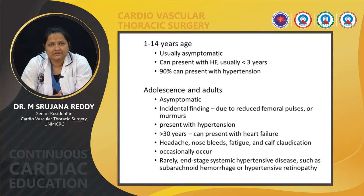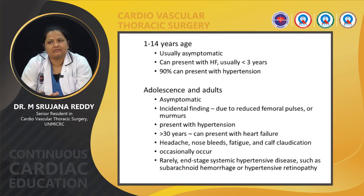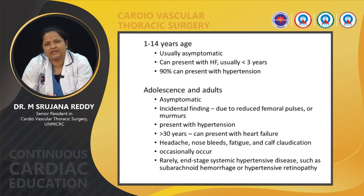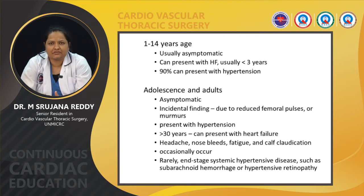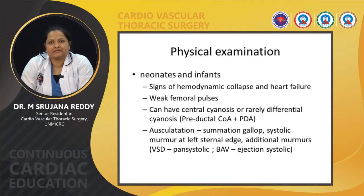In adolescence and adults, patients are usually asymptomatic, with coarctation being an incidental finding due to reduced femoral pulses or murmurs. They usually present with hypertension, and beyond 30 years can also present with heart failure. Occasionally they present with headaches, nosebleeds, fatigue, or calf claudication. Rarely, end-stage systemic hypertensive disease such as subarachnoid hemorrhage and hypertensive retinopathy can also occur.